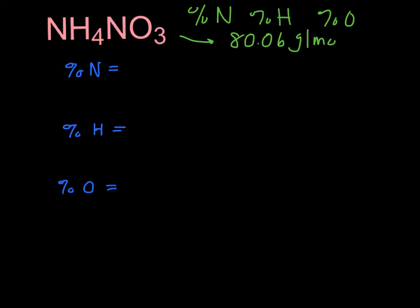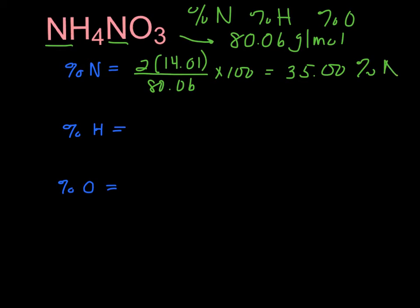And you can go ahead and check that yourself. So the percentage of nitrogen is that there's two nitrogens, and each one is 14.01, just coming from the periodic table there, divided by 80.06 times 100, and we get that it is 35.00% nitrogen. For hydrogen, there's four of them, so four times 1.01 divided by 80.06 times 100 is going to be 5.05% hydrogen.